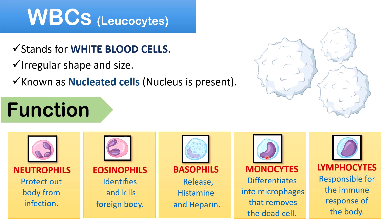Monocytes have a large indented nucleus with agranulated cytoplasm. They play a significant role in forming macrophages and other antigen-presenting cells. Monocytes differentiate into macrophages that remove dead cells and pathogens in the spleen. Lymphocytes have a large spherical nucleus with agranulated cytoplasm; these include effector and regulatory cells that trigger an immune response.